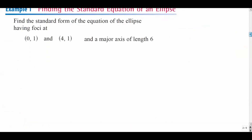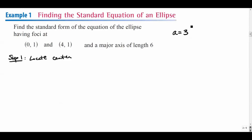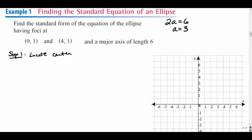Example one: find the standard equation of this ellipse. The center is not given, so step one is to find the center. We're given the coordinates of the foci and the length of the major axis. If the major axis has a length of six, then a — which is half the major axis — equals three. The foci are at (0, 1) and (4, 1).